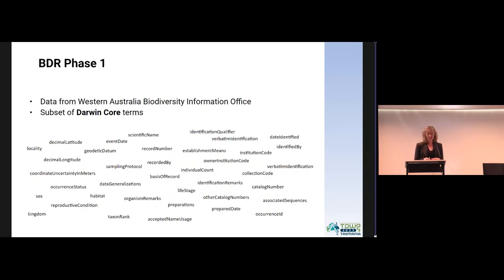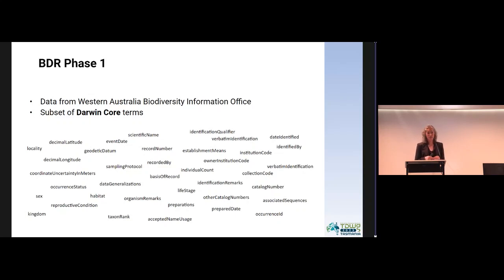In the first phase, or the pilot phase of this project, we were looking at just bringing in data from a specific data aggregator — the Western Australian Biodiversity Information Office. The data model that they were using is primarily based in Darwin Core, and these are the various terms from Darwin Core that were used in that data model.